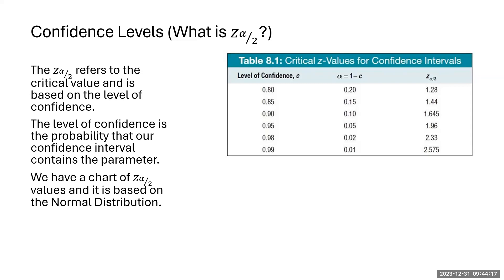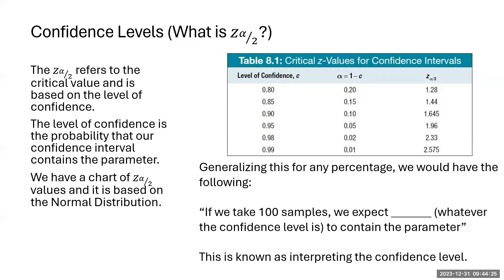One question we will ask is to interpret what we mean by something like 85% confidence. Referring back to the diagram with all the red lines — the interpretation is: if we take 100 samples, we expect 85 of the samples to contain the parameter. You just insert whatever the confidence level is. If it's 98%, we say if we take 100 samples, we expect 98 of the samples to contain the parameter. This is known as interpreting the confidence level.